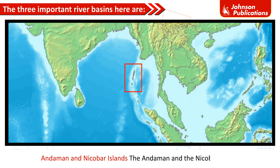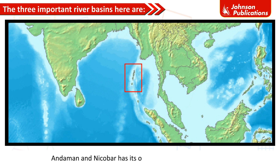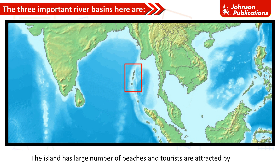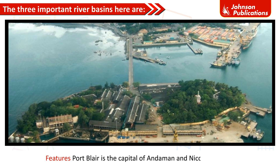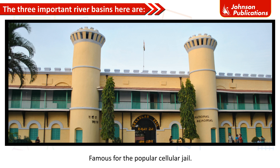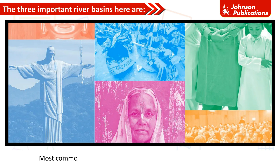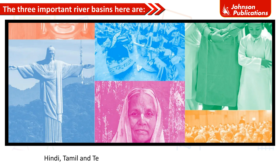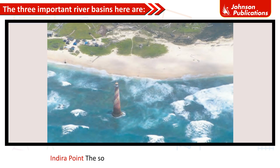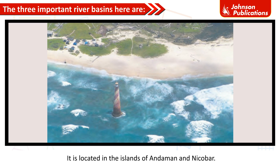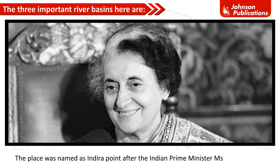The Andaman and Nicobar Islands lie to the southeast of the Indian mainland in the Bay of Bengal. The islands have a rich culture and traditions, with large numbers of beaches attracting tourists. Port Blair is the capital and is famous for the historic Cellular Jail. It has a tropical monsoon climate. Hinduism is the most common religion, followed by Christianity and Islam. Bengali is the most widely spoken language, along with Hindi, Tamil, and Telugu. Tourism is the main economy. The southernmost point of India, Indira Point, is located in the Andaman and Nicobar Islands, named after Prime Minister Indira Gandhi. It was earlier known as Pygmalion Point and Parsons Point.